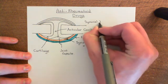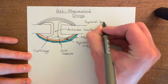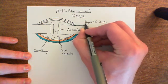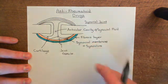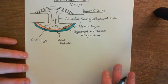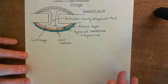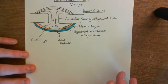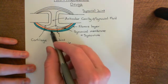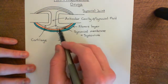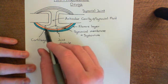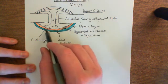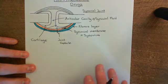Now let's have a look in a bit more detail at the structure of the synovial membrane — the synovium — because this is where the inflammation in rheumatoid arthritis is going to occur. You're going to get an acute inflammatory response which is going to end up being chronic, never ending, occurring in the synovial membrane.